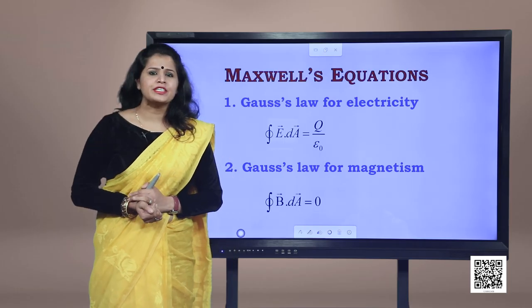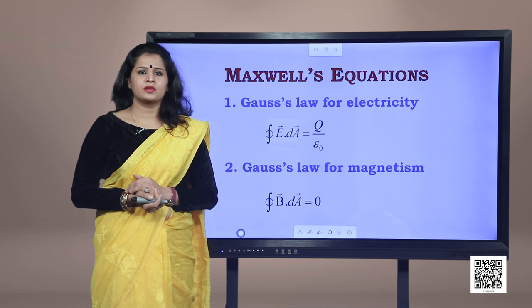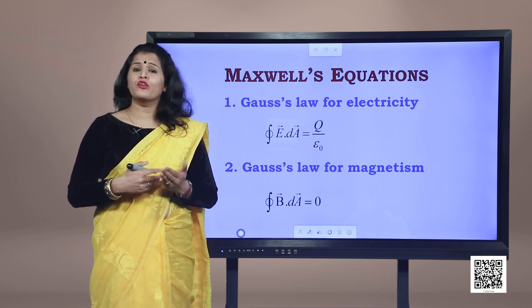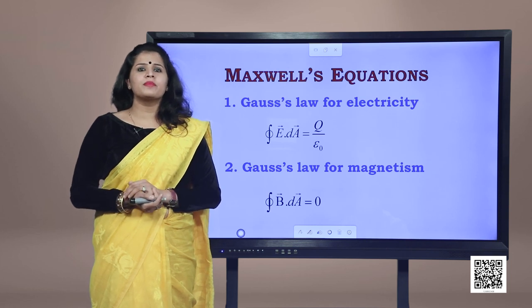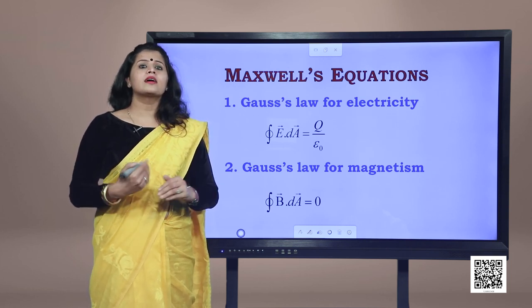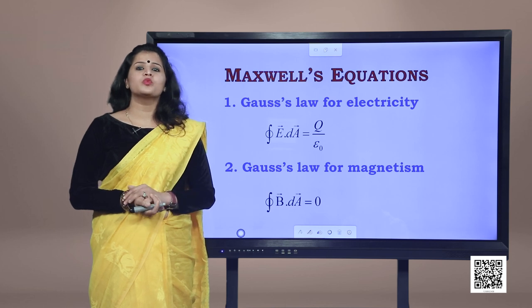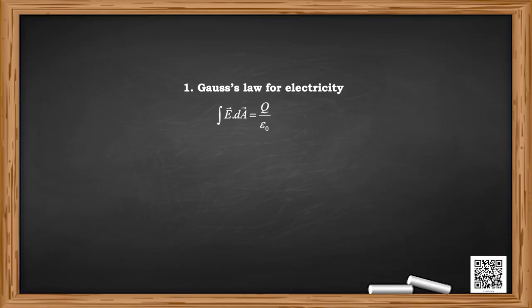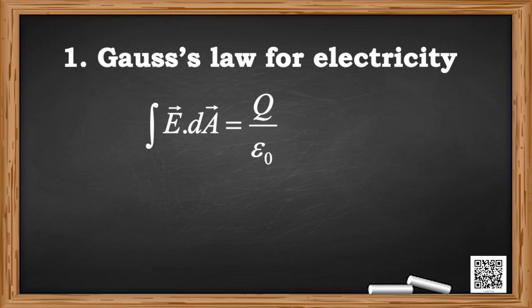All the laws of electricity and magnetism were brought together by Maxwell into one complete and beautiful theory — the theory of electromagnetism — which includes just four equations. Countless experiments have proven that Maxwell's equations are correct. The first equation is Gauss's law in electricity: the closed integral of E·dA = (1/ε₀) times the charge enclosed.